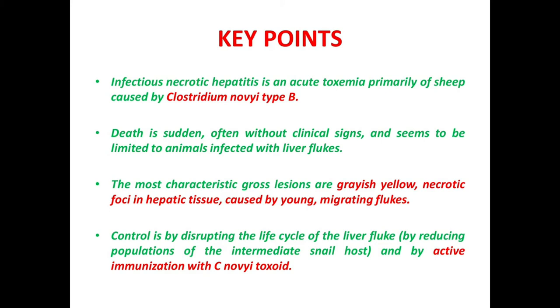Let's see the key points of black disease once again. Infectious necrotic hepatitis or black disease is an acute toxemia primarily of sheep caused by Clostridium novyi type B. Death is sudden, often without clinical signs, and seems to be limited to animals infected with liver flukes. The most characteristic gross lesions are greyish-yellow necrotic foci in hepatic tissue caused by young migrating flukes. Control is by disrupting the life cycle of liver fluke by reducing the population of the intermediate snail host and by active immunization with Clostridium novyi toxoid.